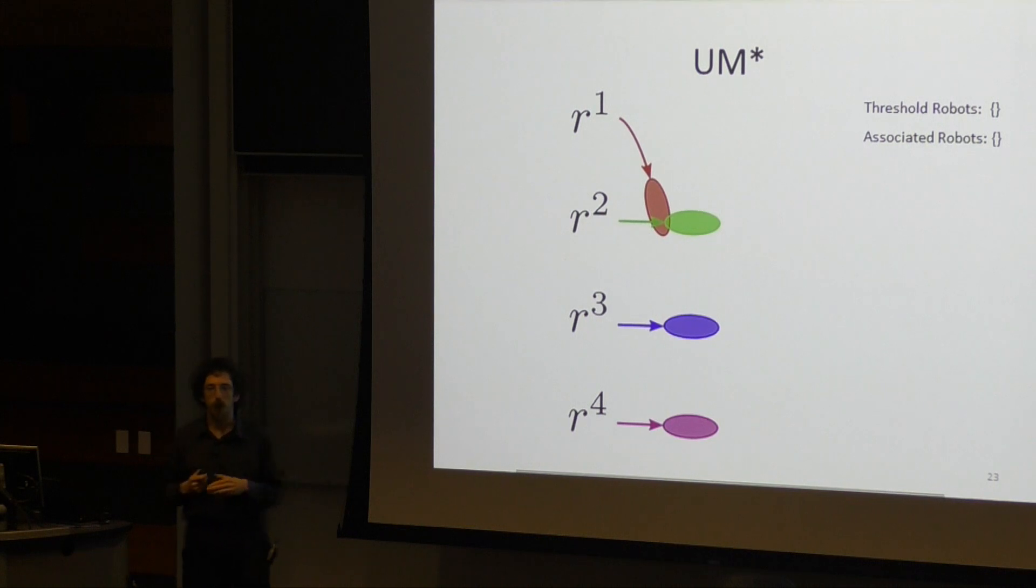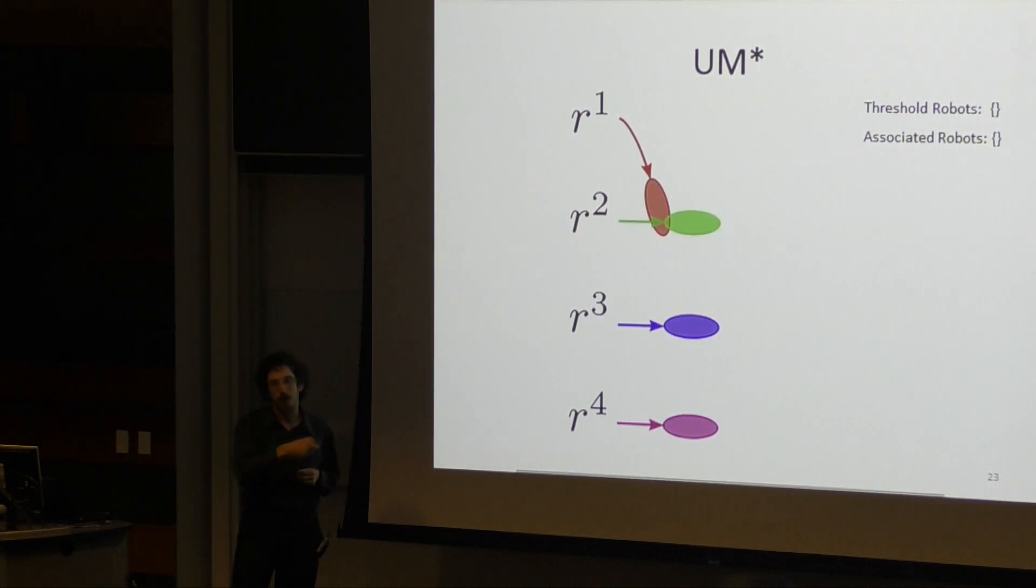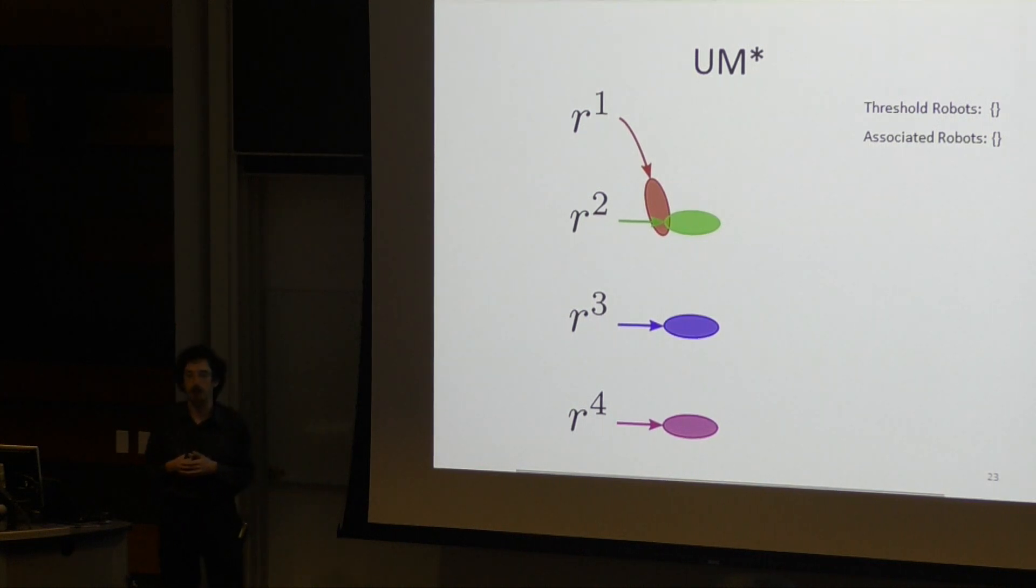To deal with the MAPFU problem, we have to make a small modification. We are now going to track both the threshold robots. These are the robots whose aggregate probability of collision along a given trajectory exceeds that threshold. And then there's the associated robots. These are the robots that have interacted with the threshold robots and thus can contribute directly to those threshold robots violating their constraints.